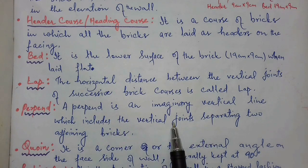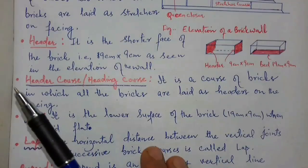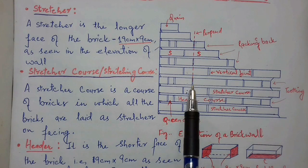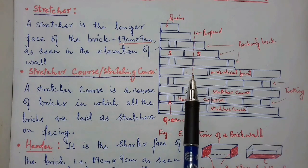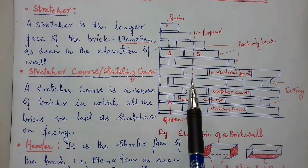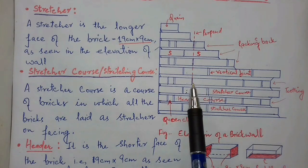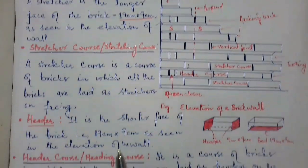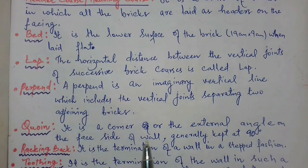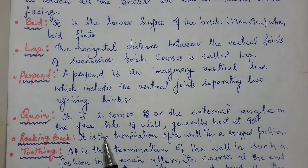Another term is perpend. A perpend is an imaginary vertical line which includes the vertical joints separating two adjoining bricks. As you can see, I have drawn a line here — this imaginary vertical line joining these joints in bricks is known as perpend.